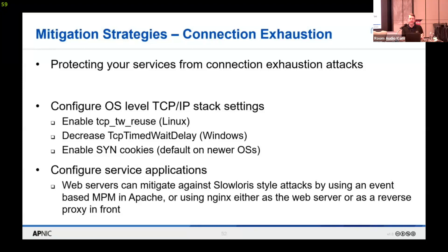You can also configure your service applications, not just at the OS layer. For example, SlowLoris was attacking event-based MPMs in Apache — it would grab and hold a connection, and the Apache MPM module would allow it to be held for a long period. This has since been modified with different modules available for Apache. An alternative is using Nginx, which uses a different processing module and was more resilient against SlowLoris. Even if you couldn't change your Apache server, you could put Nginx in front of it as a reverse proxy to protect your Apache web server behind it.